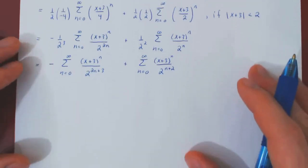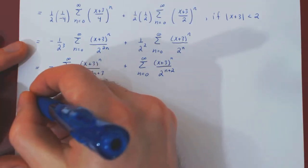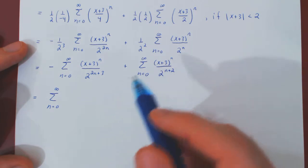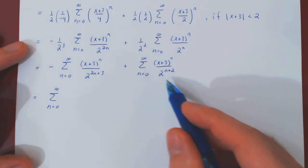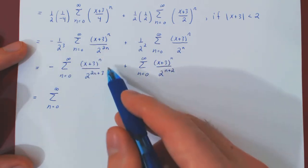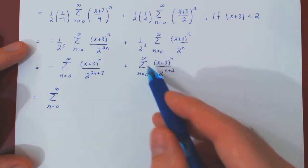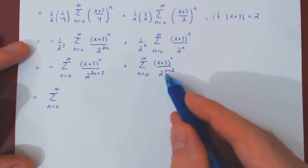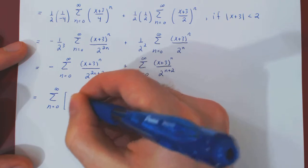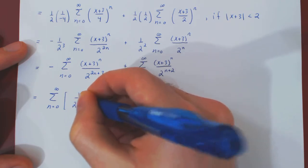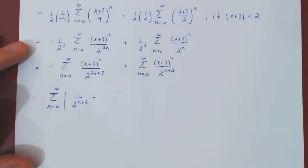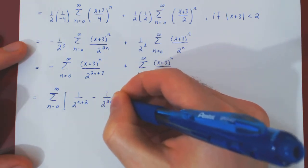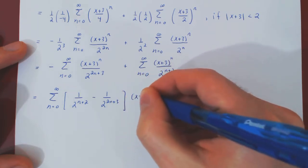We can now combine them as one Taylor series. Both terms have (x plus 3) to the n, so factoring that out leaves 1 over 2 to the n plus 2, minus 1 over 2 to the 2n plus 3, times (x plus 3) to the n.